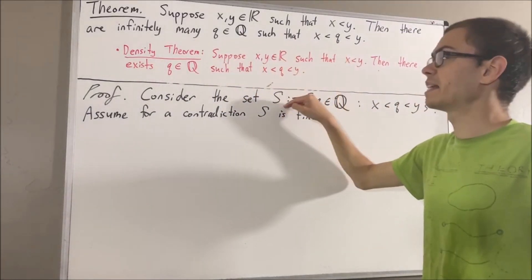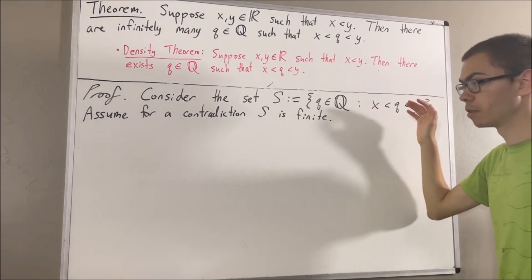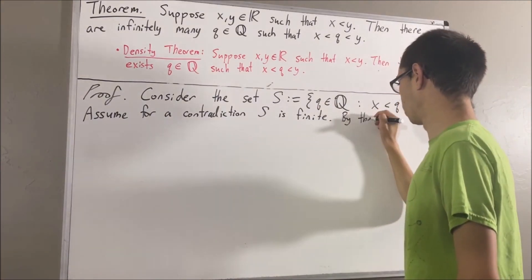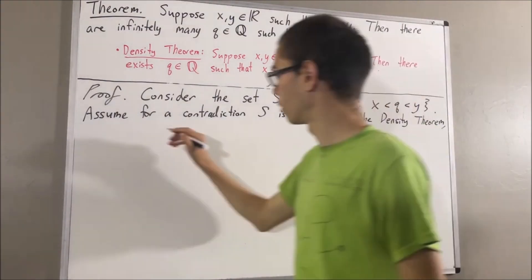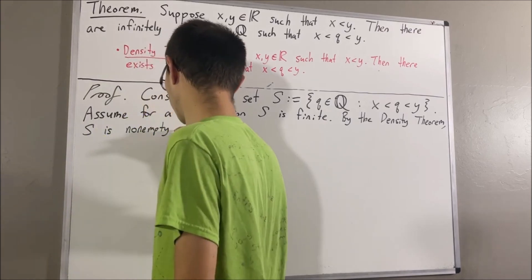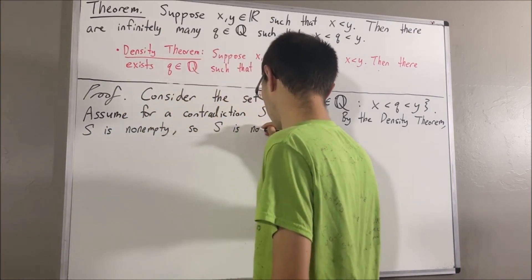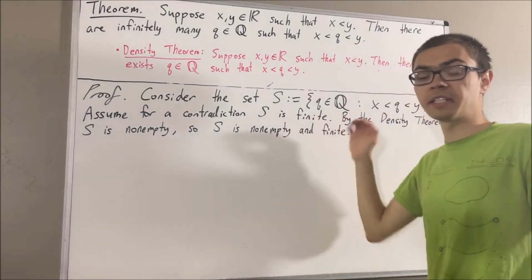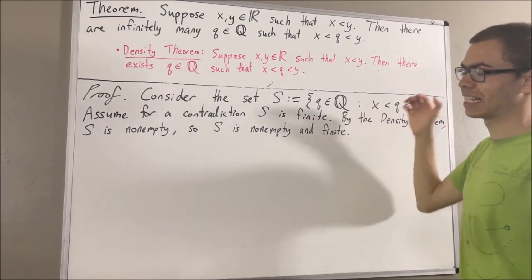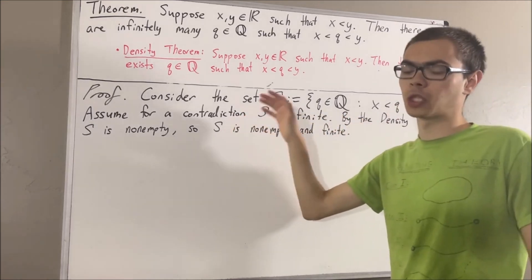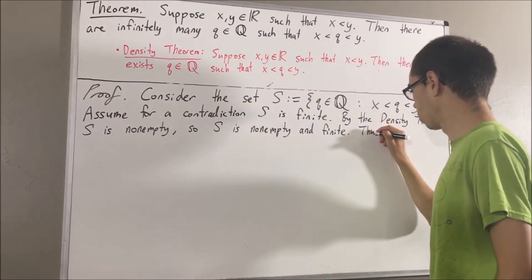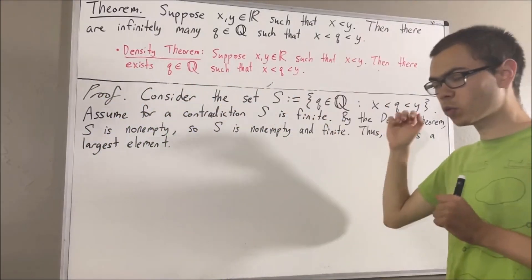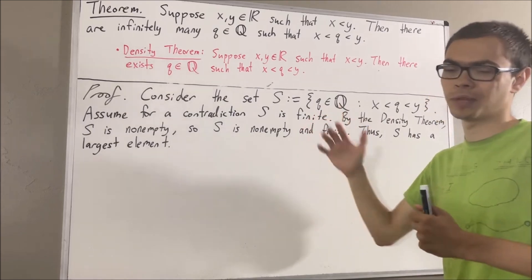By the density theorem, S is non-empty. So we must have that S is non-empty and finite. Every non-empty finite subset of real numbers has a largest element, so S must have a largest element. We'll say that the largest element of S is capital M.